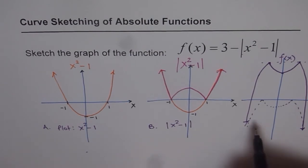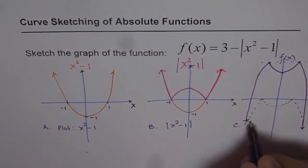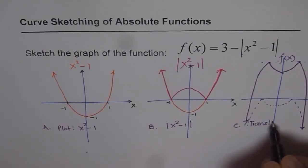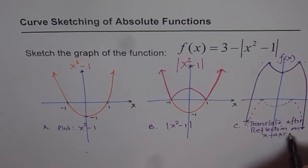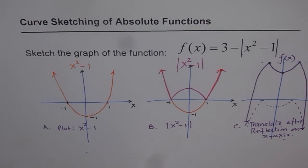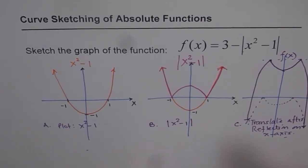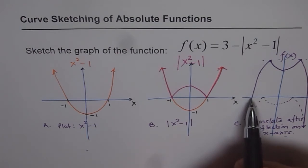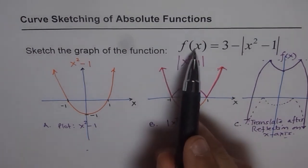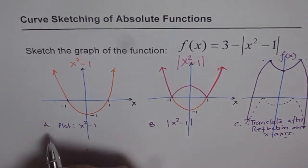And the last stage is translate after reflection on x-axis to get the final graph. So as an exercise, what we should also do is to figure out what are the x-intercepts in this particular case. That means when f(x) equals to 0. So we can calculate this.